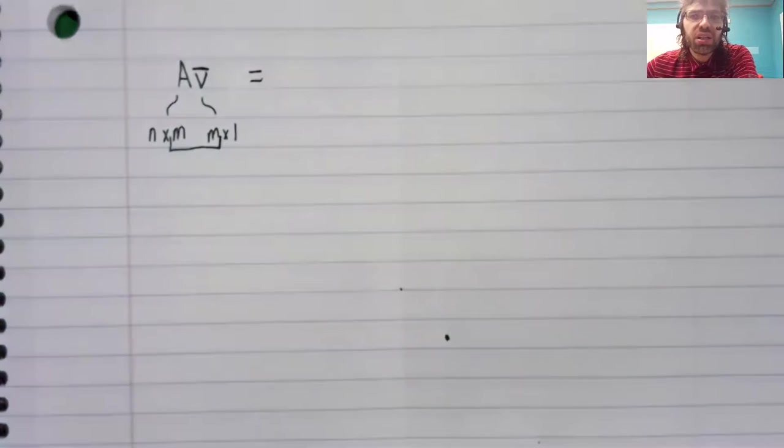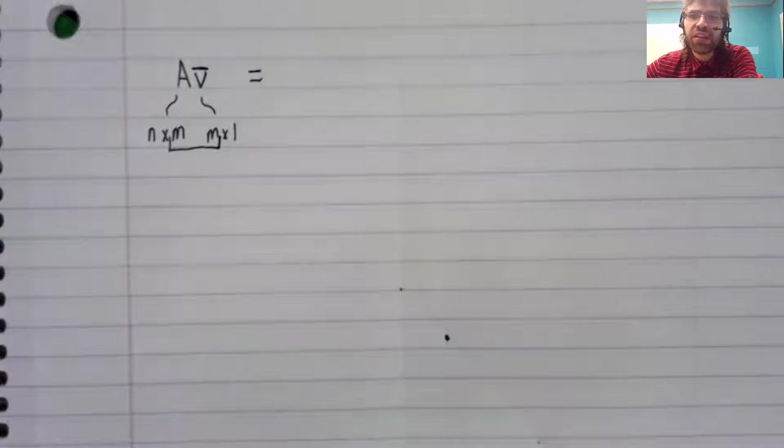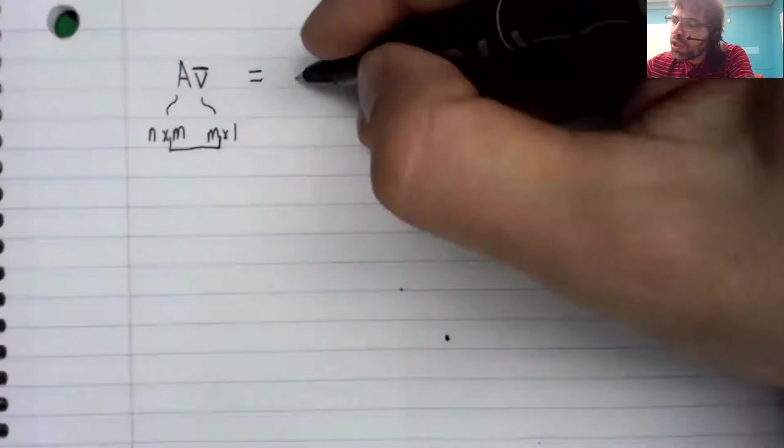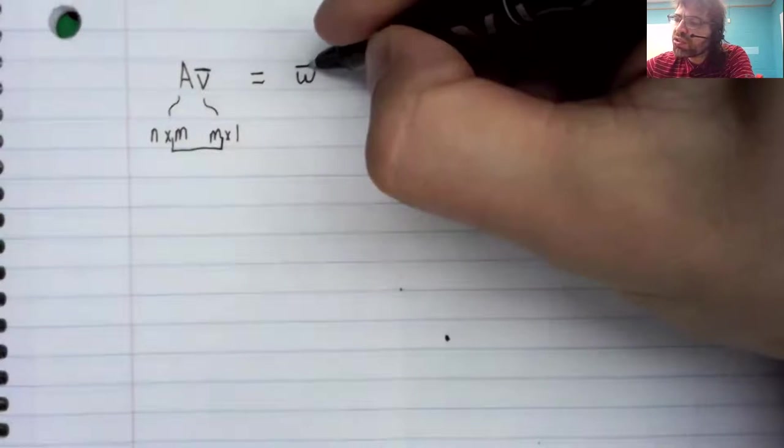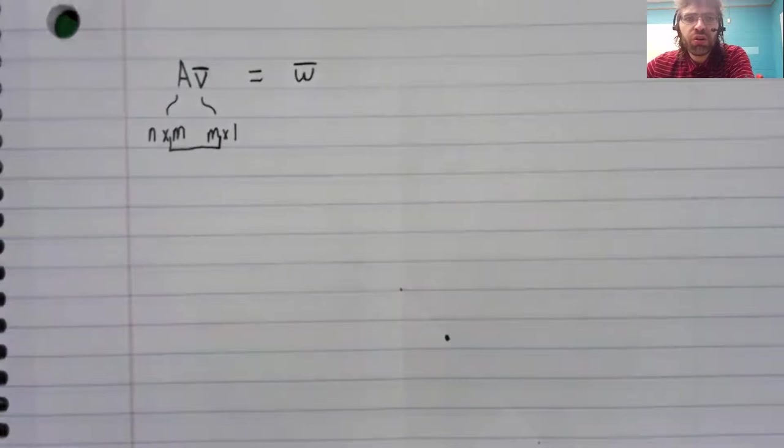What is a matrix times a vector? I mean, is it a matrix, a vector, a real number? It's the second of those. So matrix times a vector is a vector.